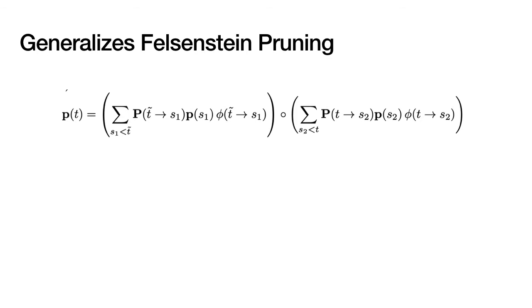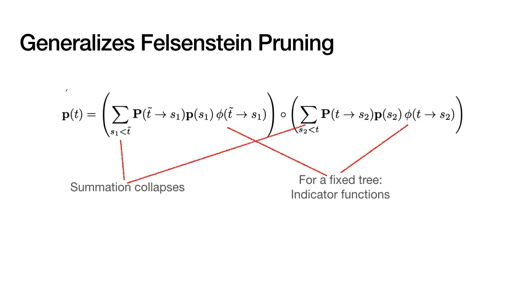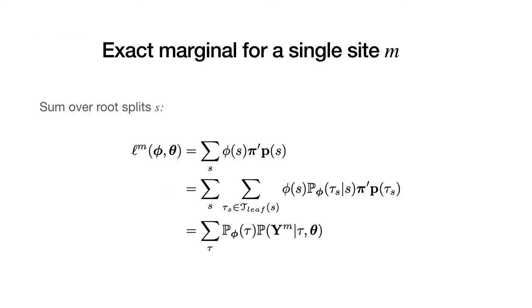So here you can see that we benefit greatly from computing tree probabilities dynamically using subsplit. Note that if we have a single tree, then phi is an indicator function and this recursion collapses to Felsenstein pruning recursion. Hence the name generalized pruning algorithm.